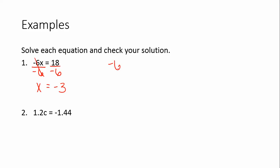So negative 6 times negative 3 — does that equal 18? And in fact, it is 18. So the left side equals the right side. Our answer checks out. That's how we know it's correct.